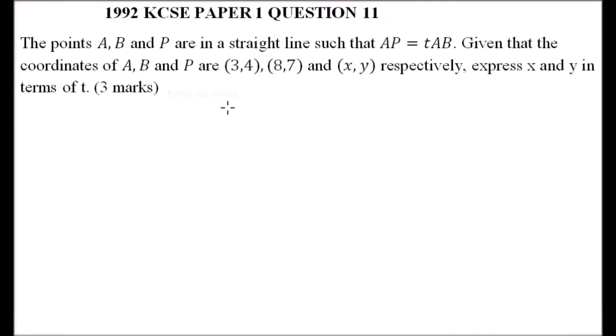Given that AP is equal to tAB, where the coordinates of A, B and P are (3,4), (8,7) and (x,y) respectively, express x and y in terms of t.